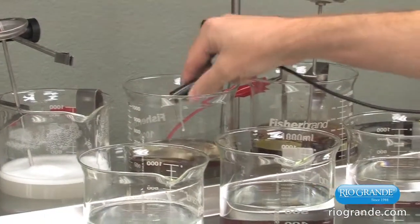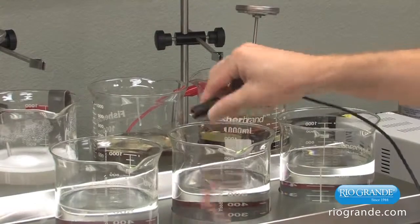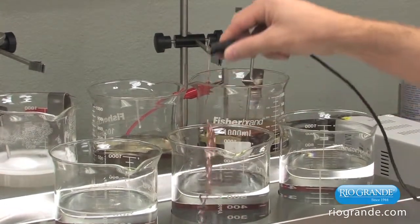Rinse again in distilled water and then immediately begin the plating process for the finish you have chosen. In this demonstration, we're plating rhodium for a bright white finish.